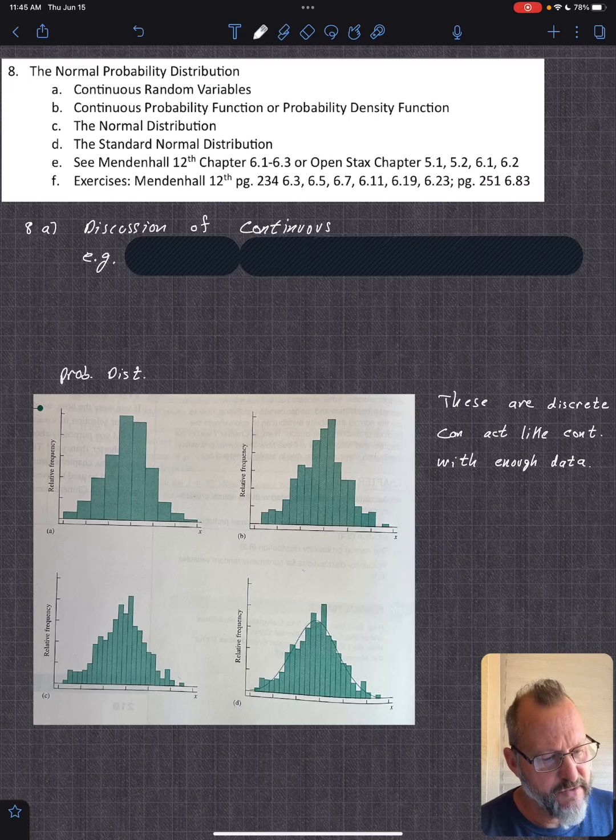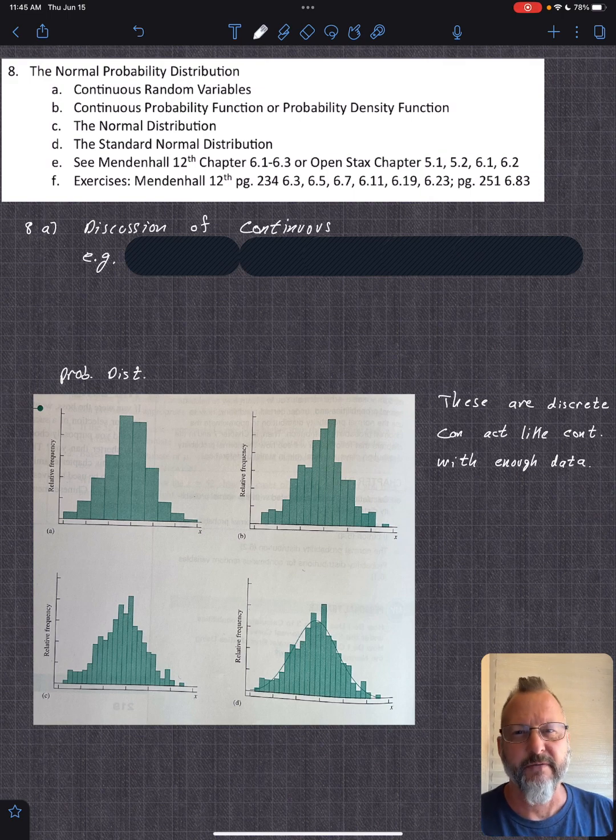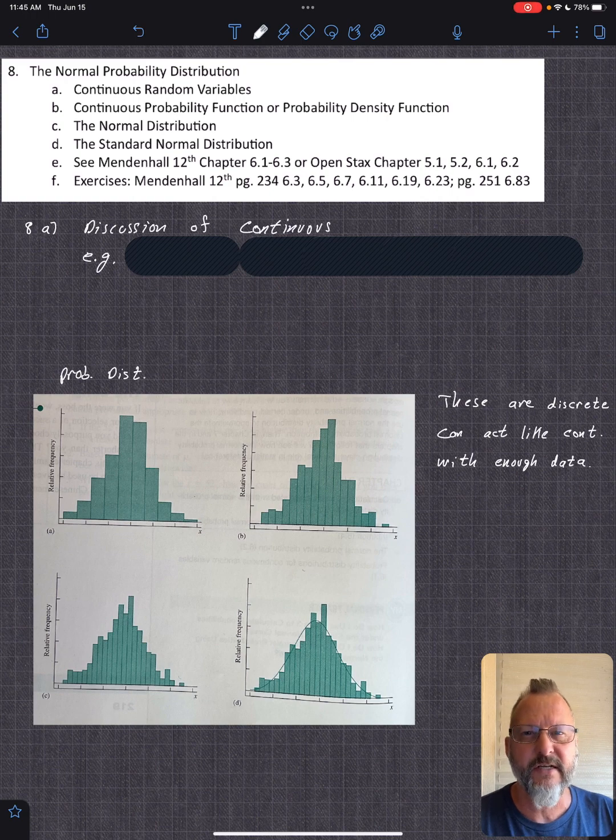Let's get started on section 8, the normal probability distribution. For all the distributions we're going to talk about, one that comes up the most, one that people use all the time, is kind of the fallback - this concept of the normal distribution.